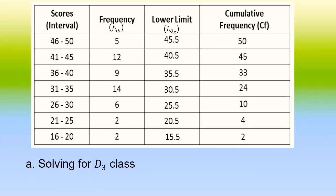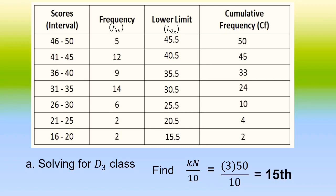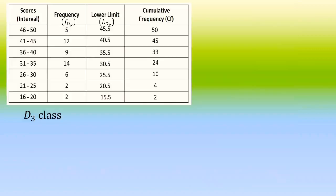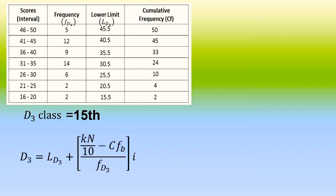For D sub 3, we begin by finding the D sub 3 class using the formula K times N divided by 10, which equals 3 times 50 divided by 10, giving us 15. So the value of our D sub 3 class is equal to 15. We then locate the position in our less-than cumulative frequency where the value is greater than or equal to 15, which falls in the class interval 31 to 35.